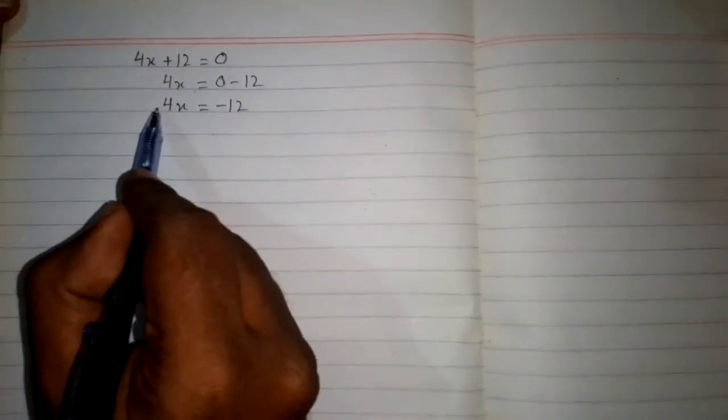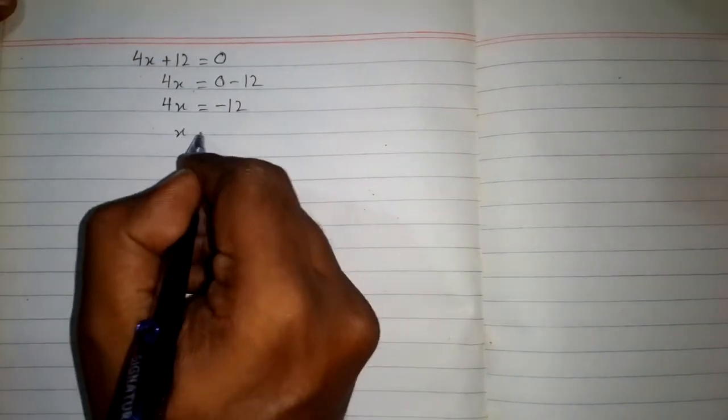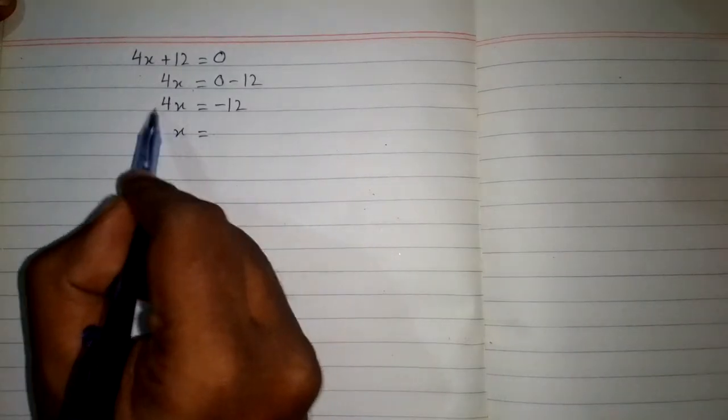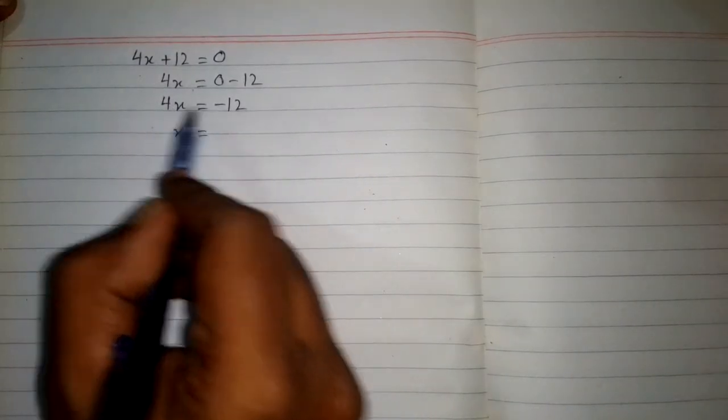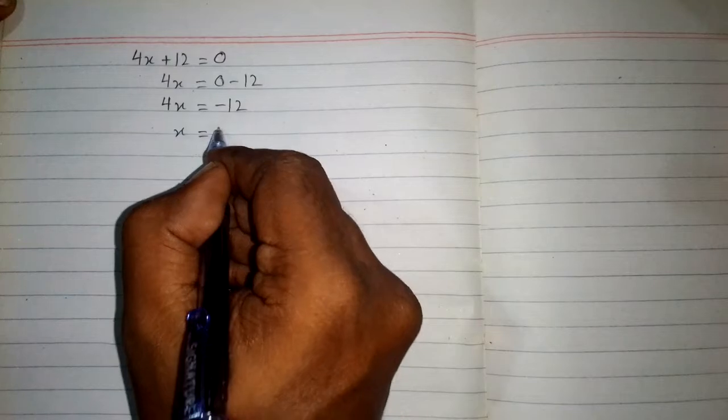Now we will take this 4 on the other side of equation. And since 4 is multiplying on this side, so 4 will be dividing on the other side.